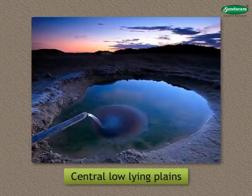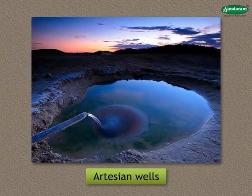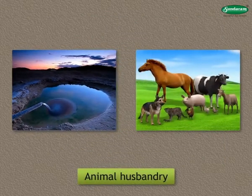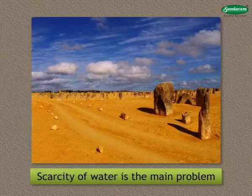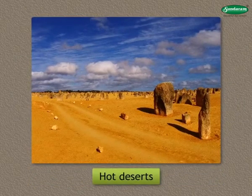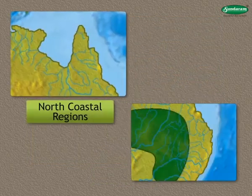In the central low-lying plains, there are distinctive artesian wells. Water from these wells is mainly used for animal husbandry. Scarcity of water is the main problem in the hot deserts to the west.